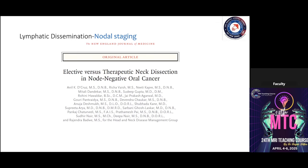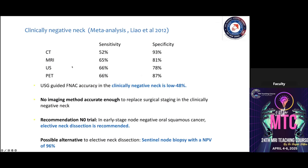Meta-analyses show all modalities have roughly equal sensitivity and specificity, and even ultrasound-guided FNA accuracy is low for clinically negative nodes. Therefore, elective lymph node dissection is recommended for early-stage oral squamous cancers — whether tongue or buccal mucosa — because imaging is not sensitive enough to detect these nodes in early stages.